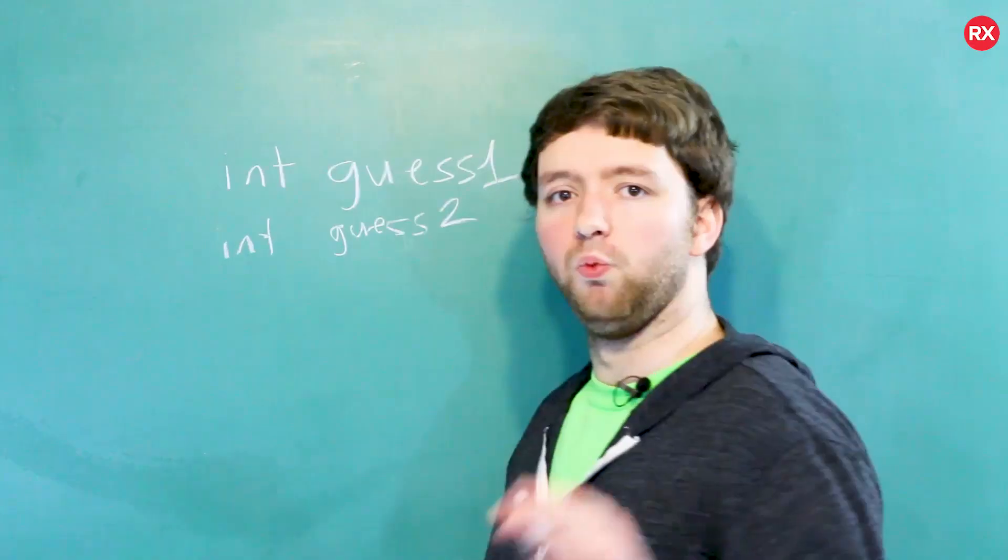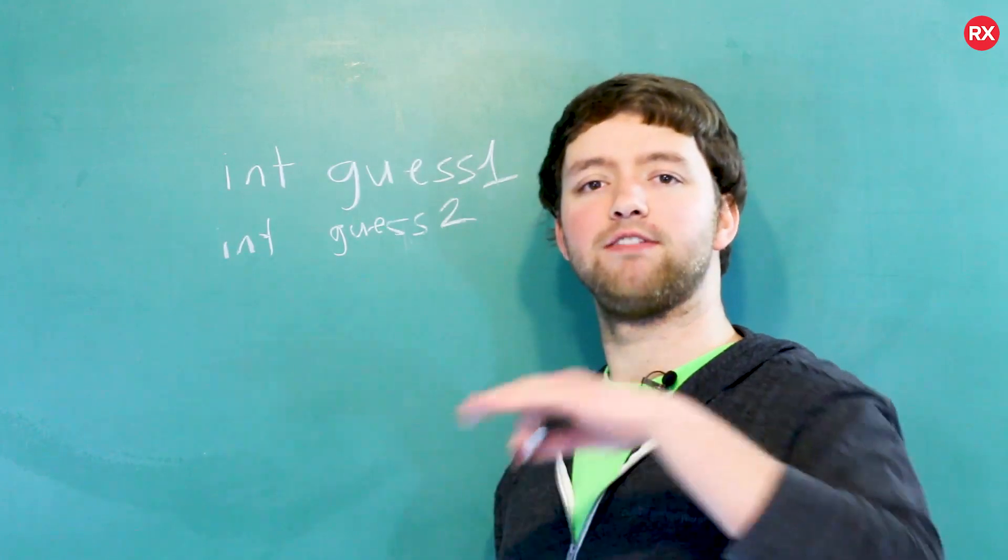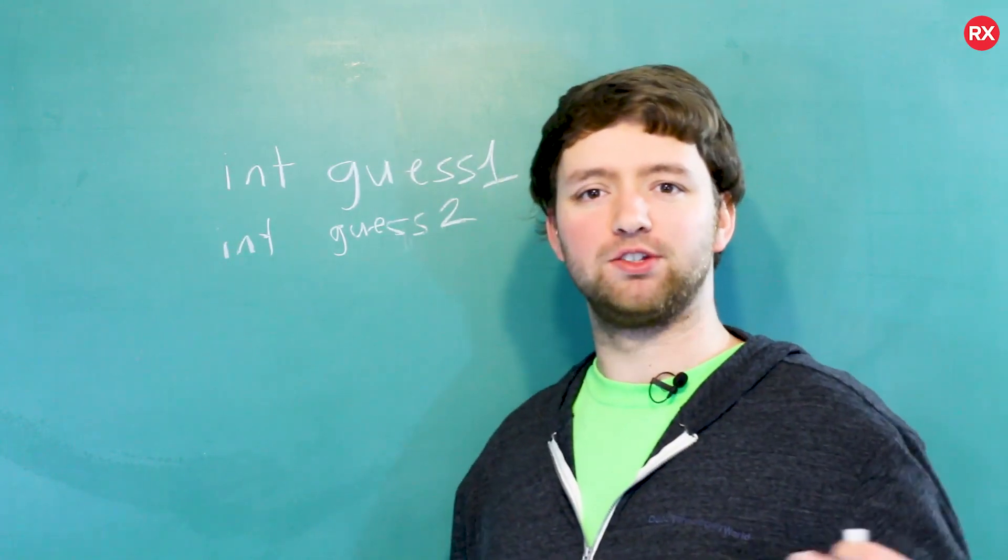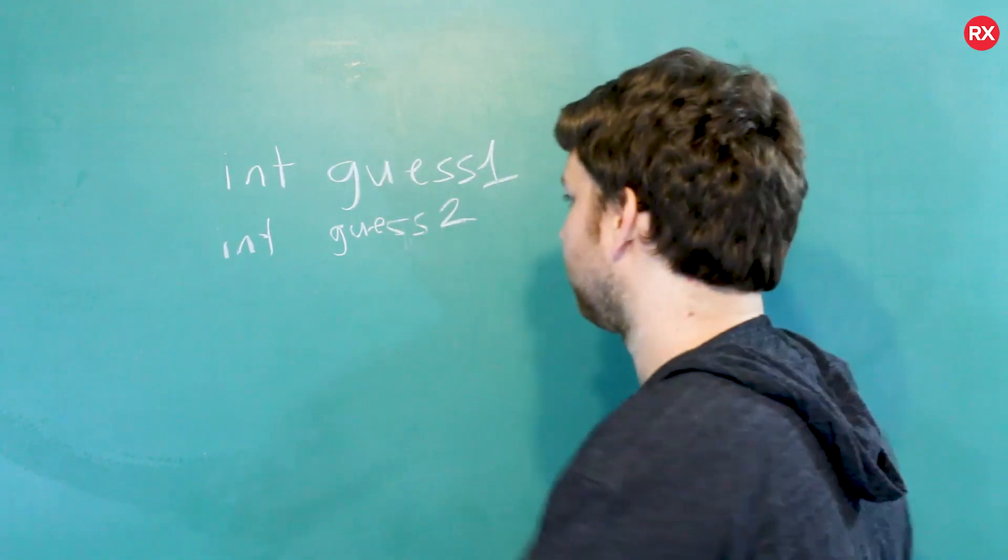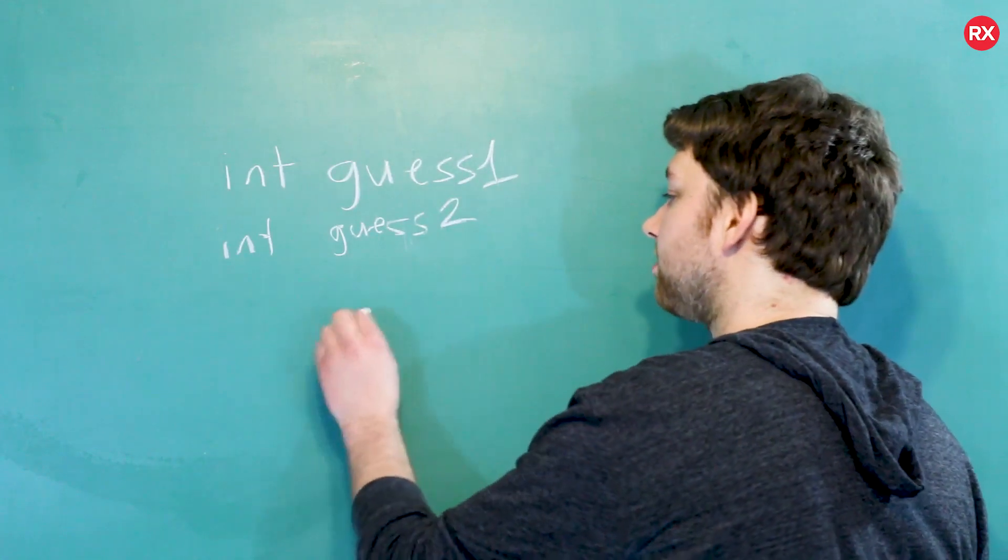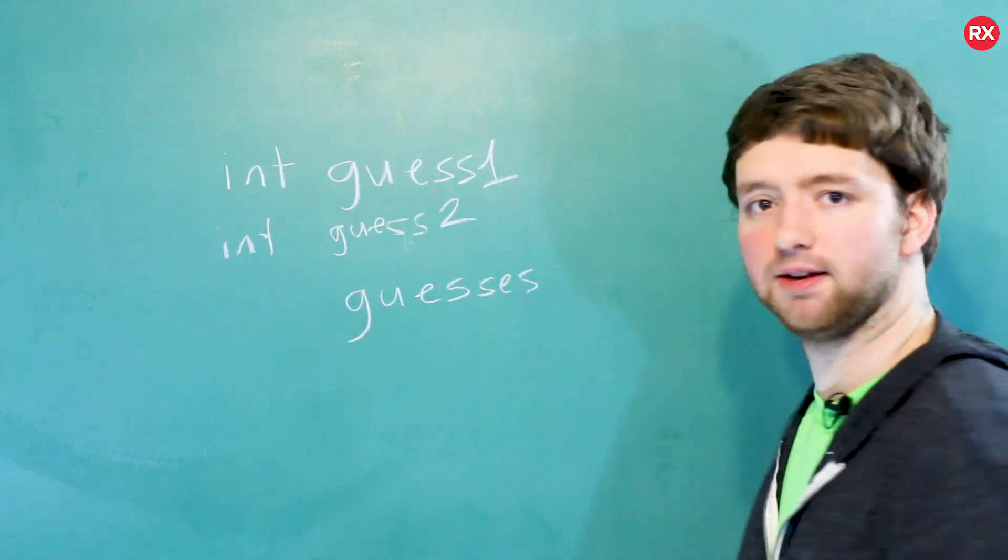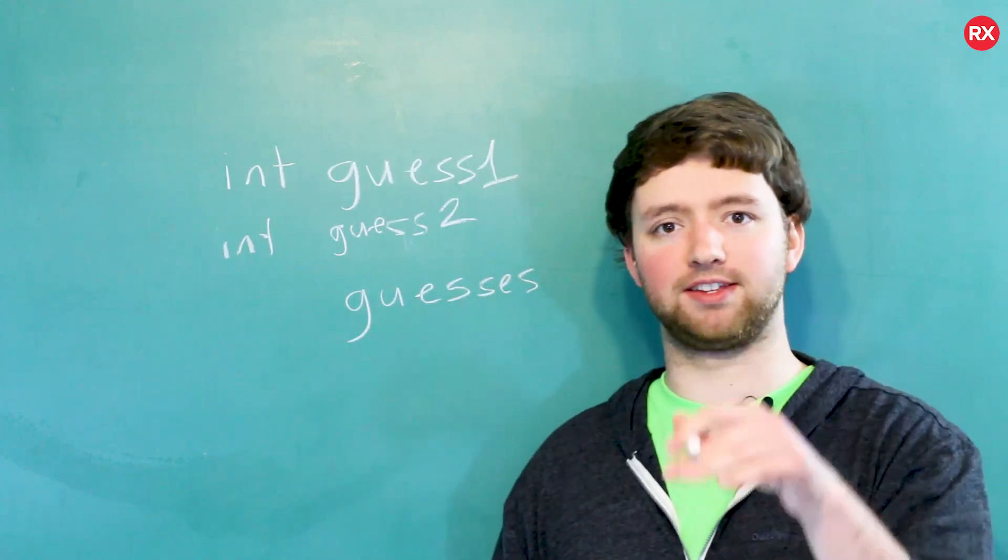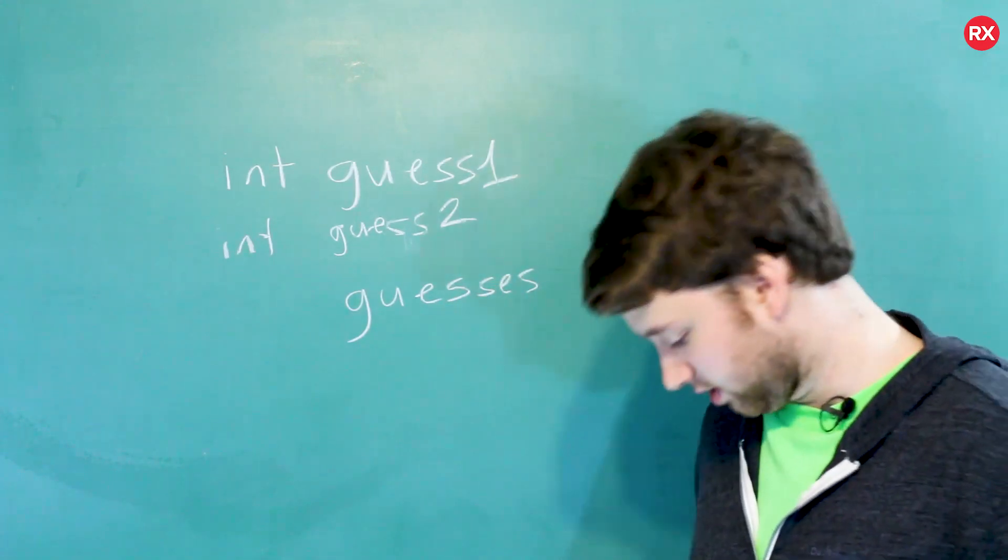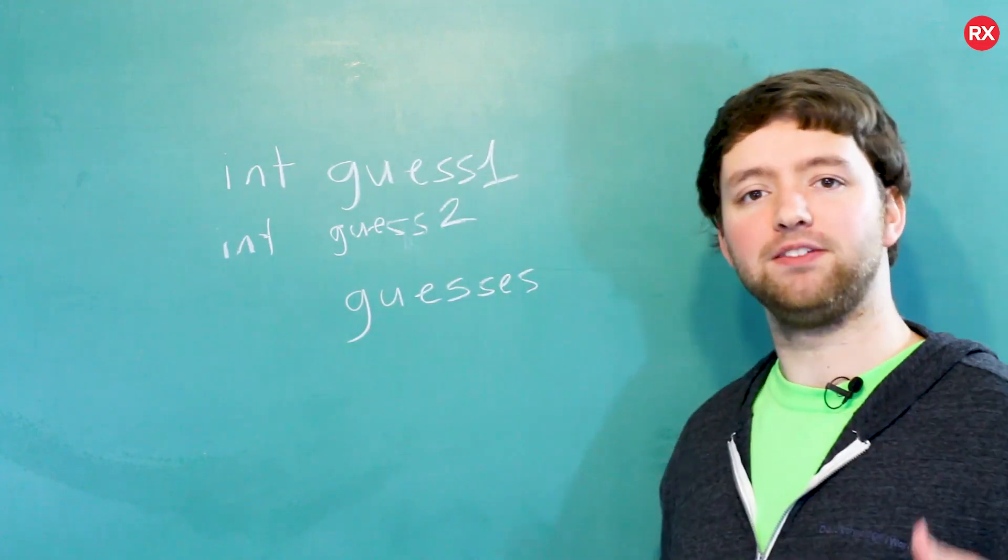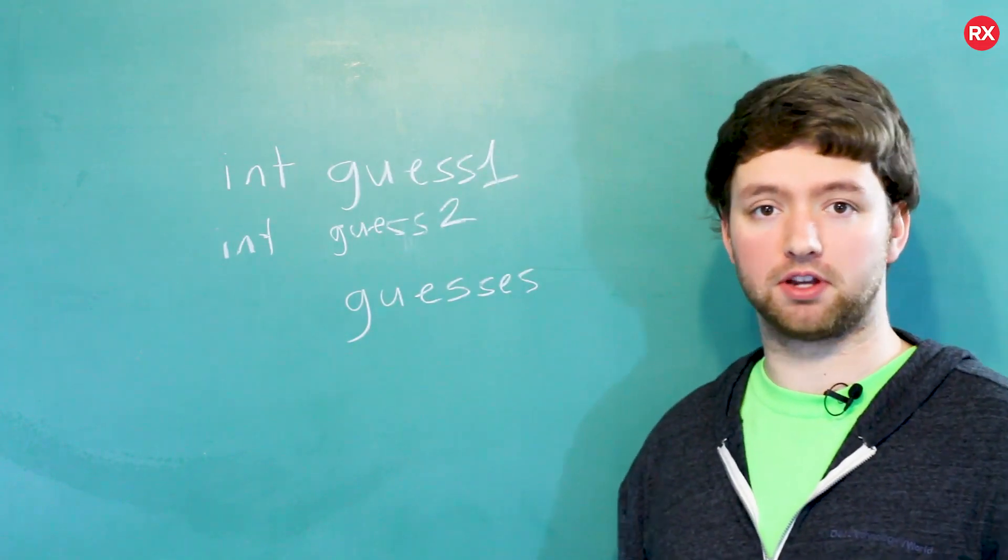What if in theory we could have some data type that could store multiple guesses? So instead of having int guess, we could have something like guesses - kind of like a basket where we're going to just throw our guesses into it. Well, that - oh, what is this video about? Well, that is where arrays and vectors come in.